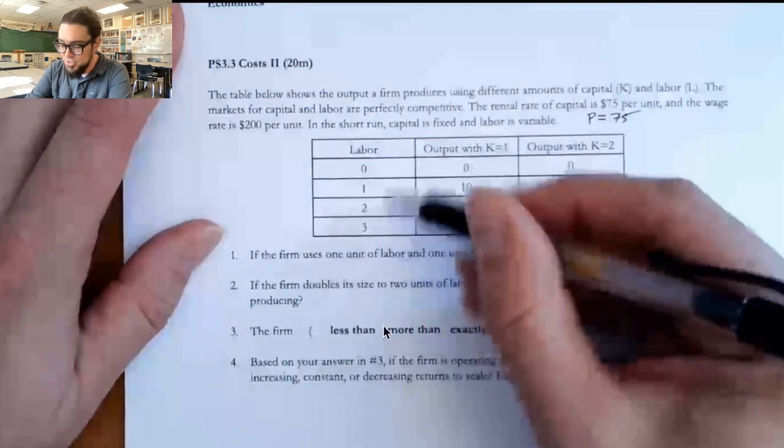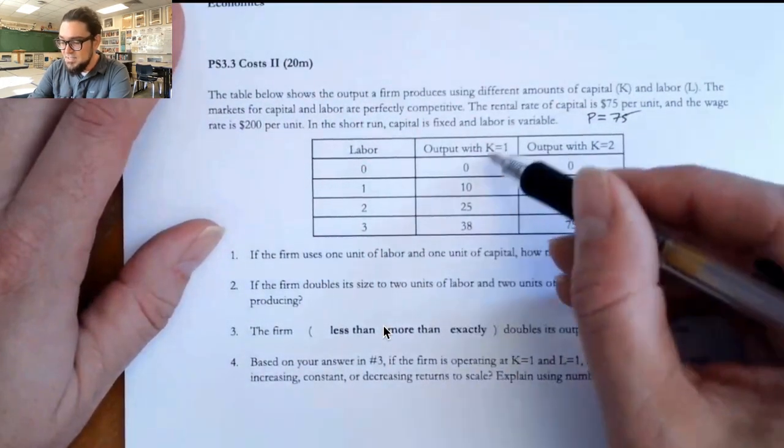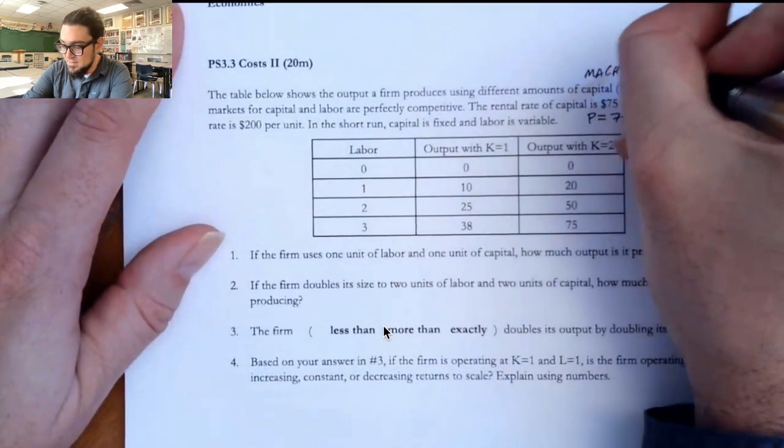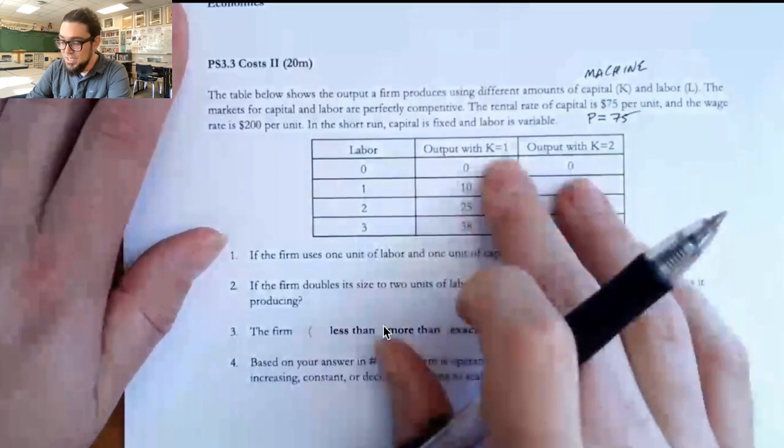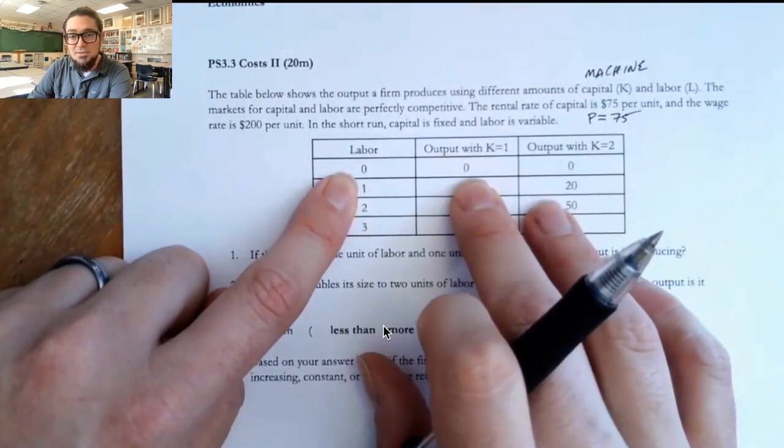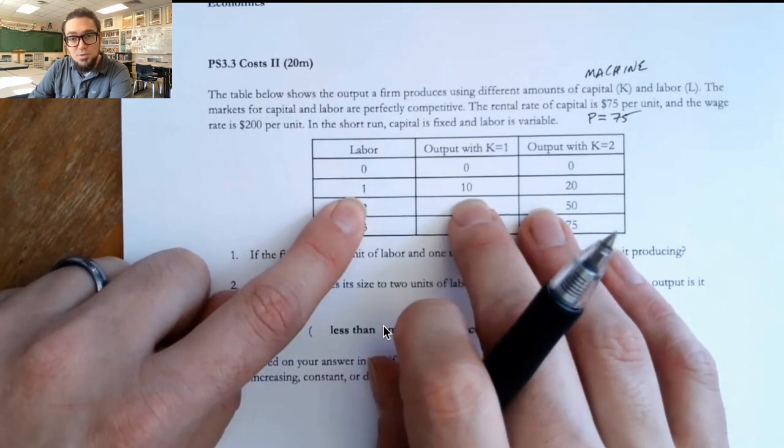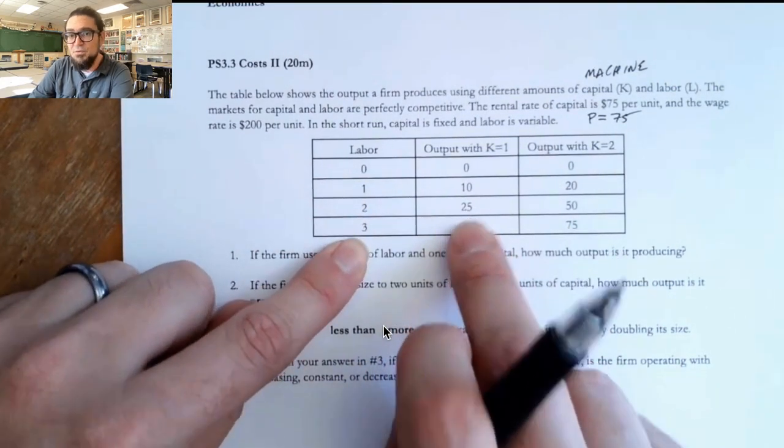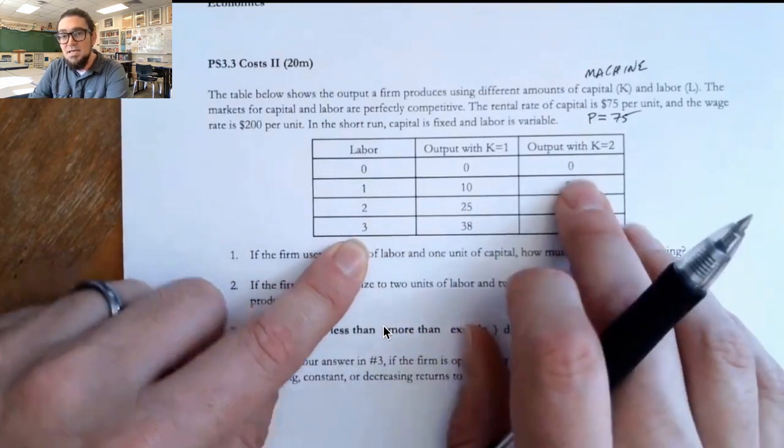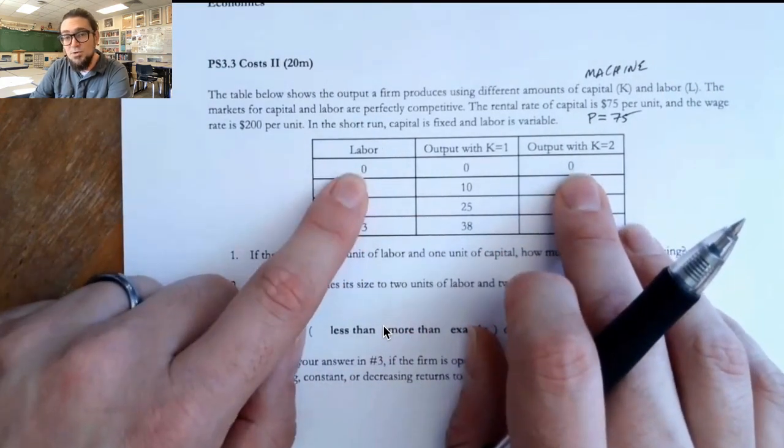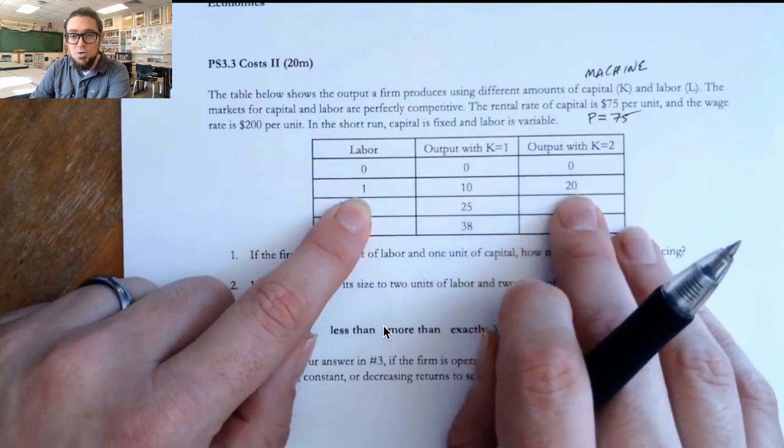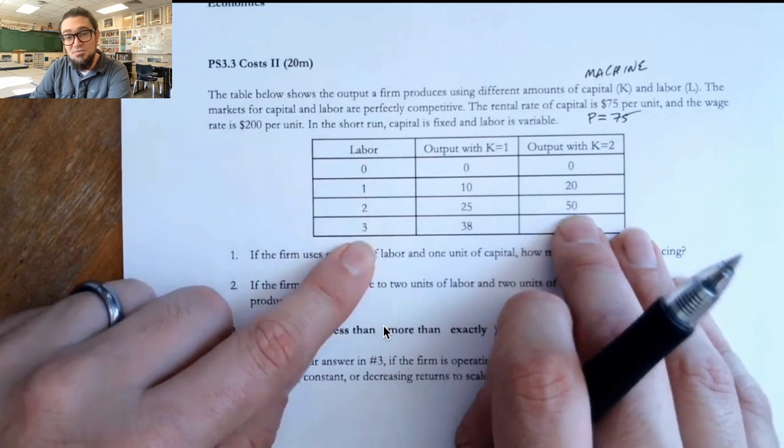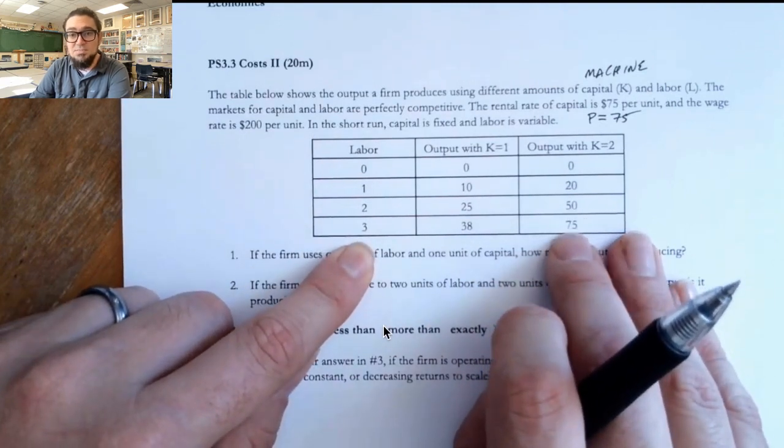Now, these are the variable inputs, 0 to 1 to 2 to 3. And this would be like the output if we had one machine, right? So think about this capital as a machine. So if we had one machine and zero workers, we're not producing anything. If we had one machine and one worker, we produce 10. If we had two workers and one machine, we produce 25. If we have three workers and one machine, we produce 38. If we have two machines and one worker, we make 20.